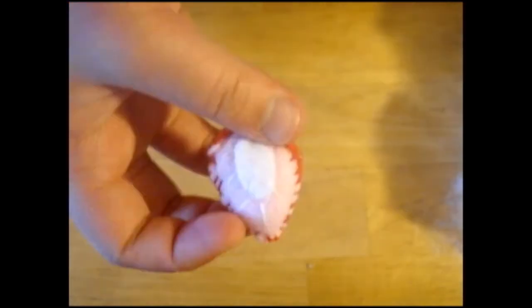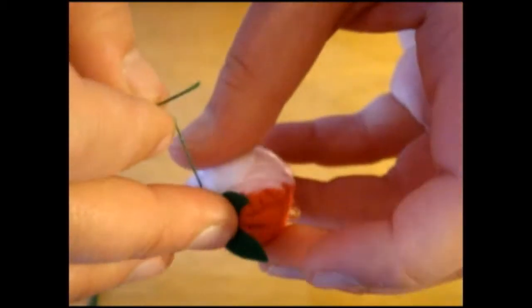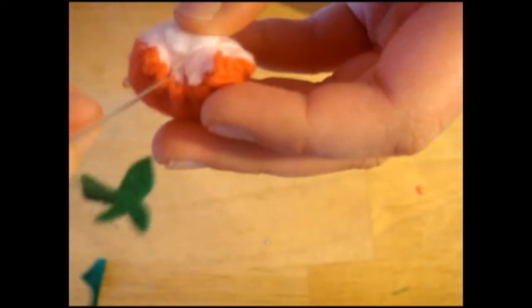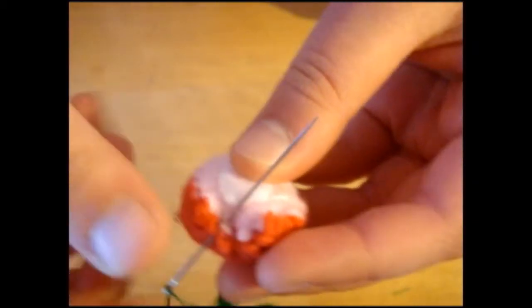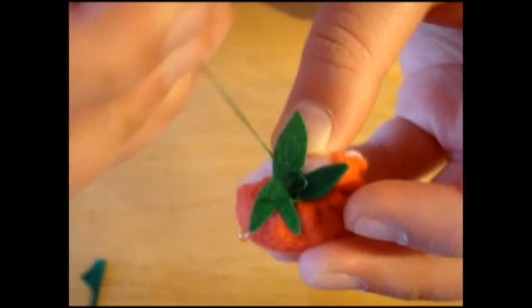Now you can leave your strawberry like this, but I'm going to put a little leaf on the end. So cut out a piece from green felt, and using green embroidery thread, sew the leafy green part of the strawberry onto your strawberry.